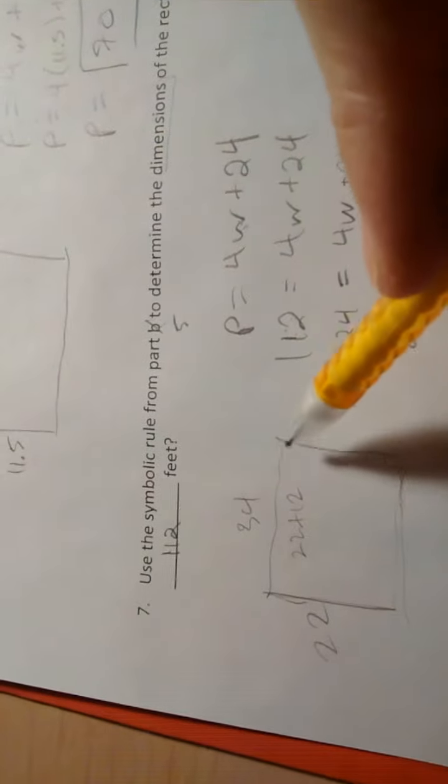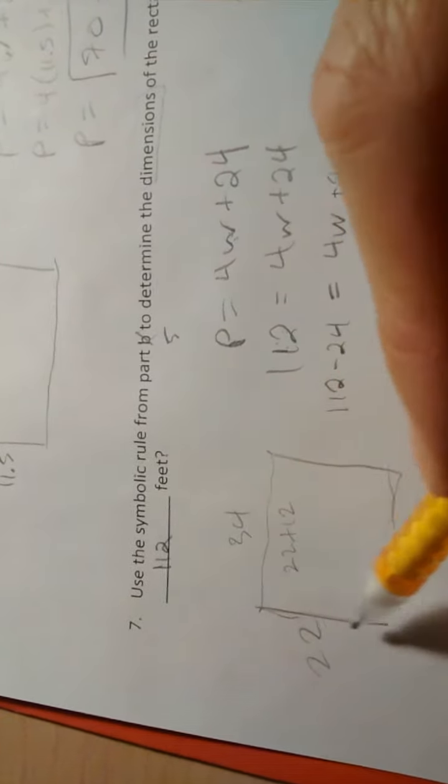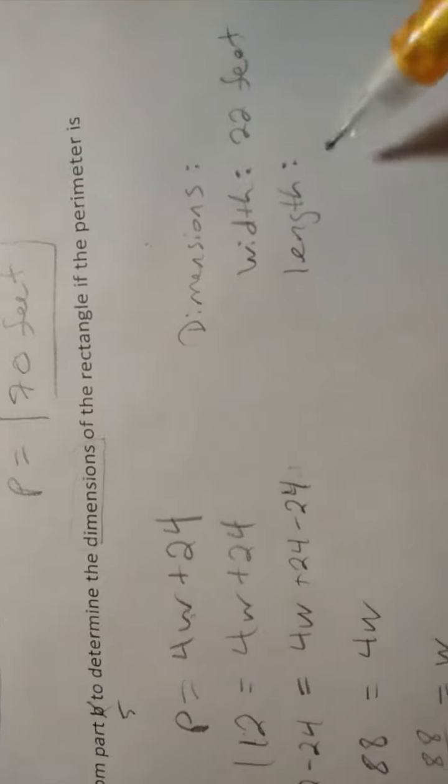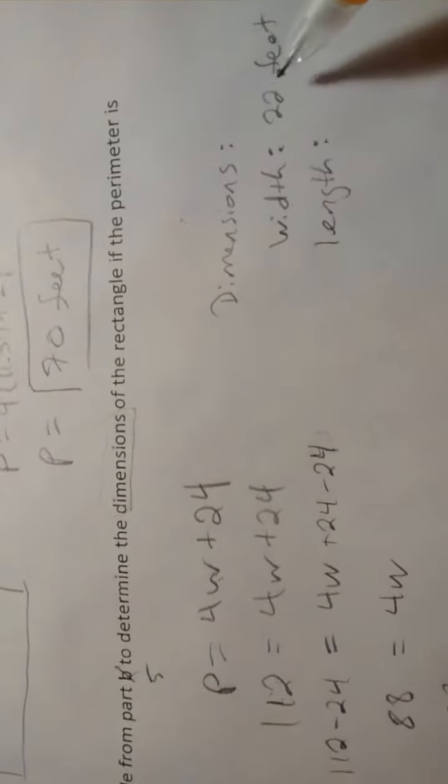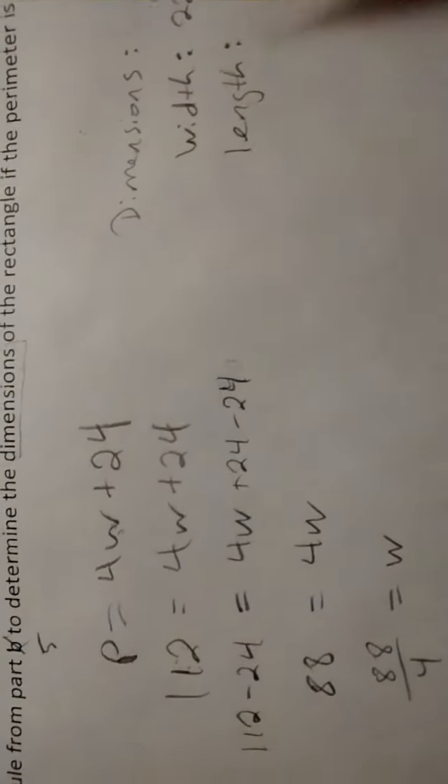So our rectangle has a dimension of 34 length and 22 width. That's what we mean by dimension. So you've got to write that down here. So dimension is 22 feet and length 34 feet.